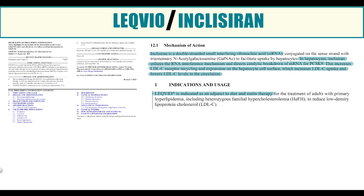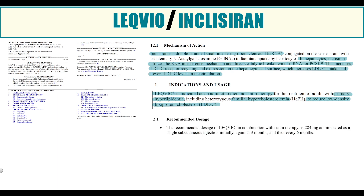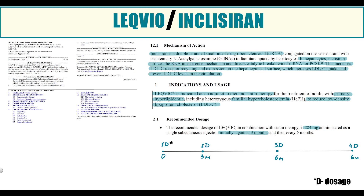Leqvio (Inclisiran) is indicated as an adjunct to diet and statin therapy for treatment of adults with primary hyperlipidemia, including heterozygous familial hypercholesterolemia, and to reduce LDL cholesterol in cases of established atherosclerotic cardiovascular disease or in high-risk populations. The recommended dosage is 284 mg administered as a single subcutaneous injection initially, after 3 months, and then every 6 months. A key benefit over other PCSK9 inhibitors such as monoclonal antibodies alirocumab or evolocumab is the less frequent injection regimen.